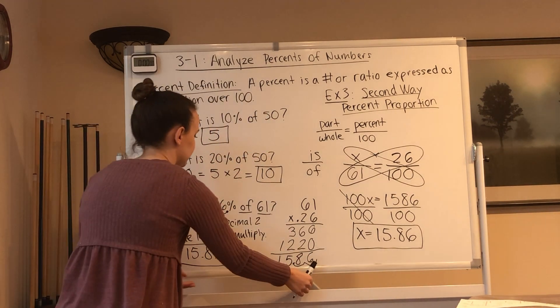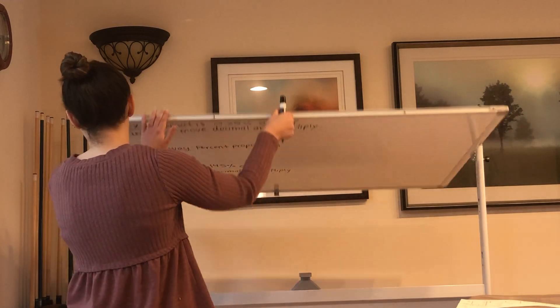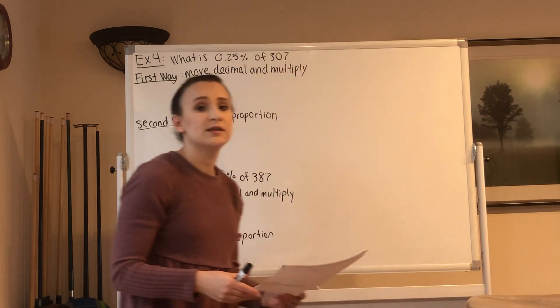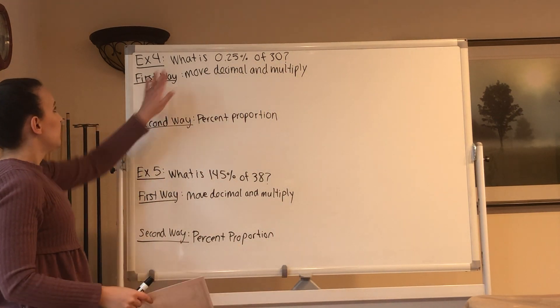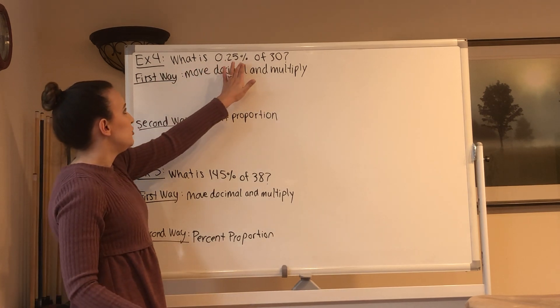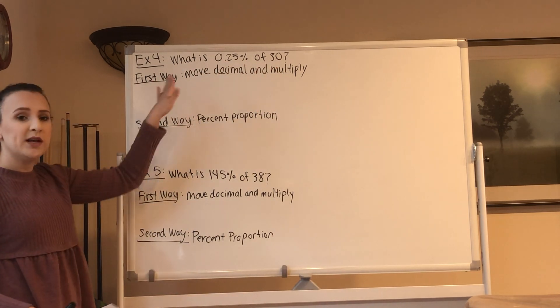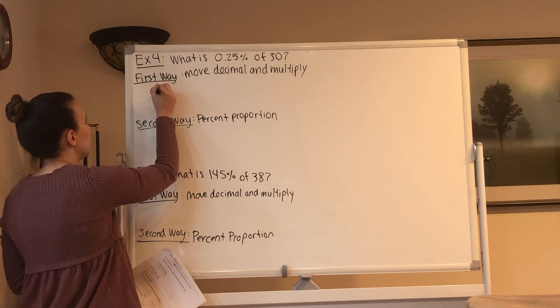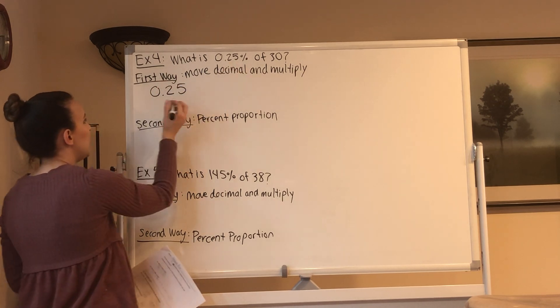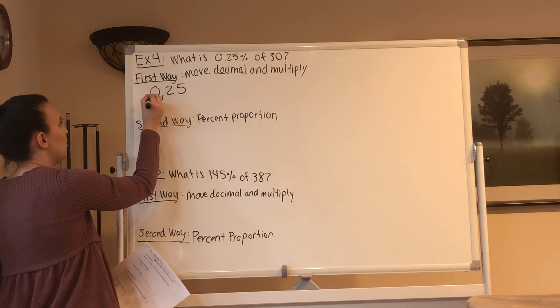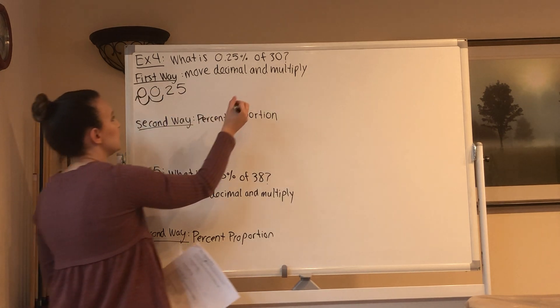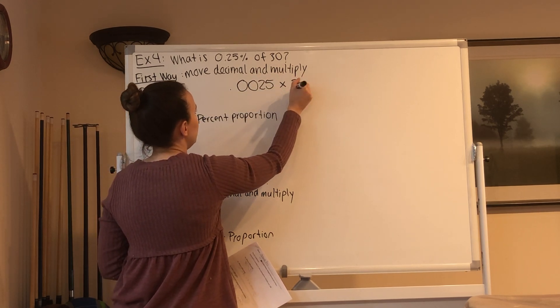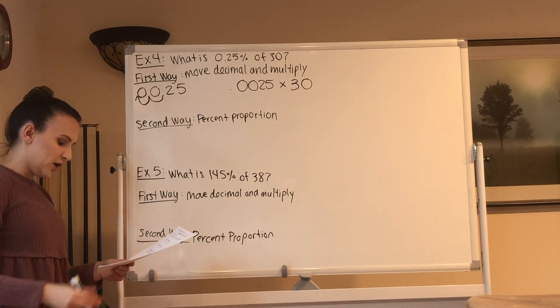Next problem. Continuing to take notes. These are not in your book. Example four. What is 0.25% of 30? So the first way to do this is to move the decimal and multiply. So if we move the decimal here, 0.25, we move the decimal two places to the left, 1, 2. Now it changes to 0.0025 times 30.